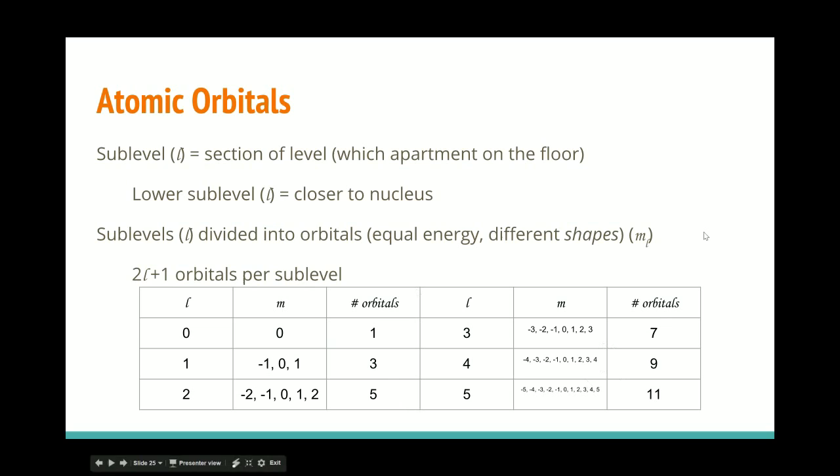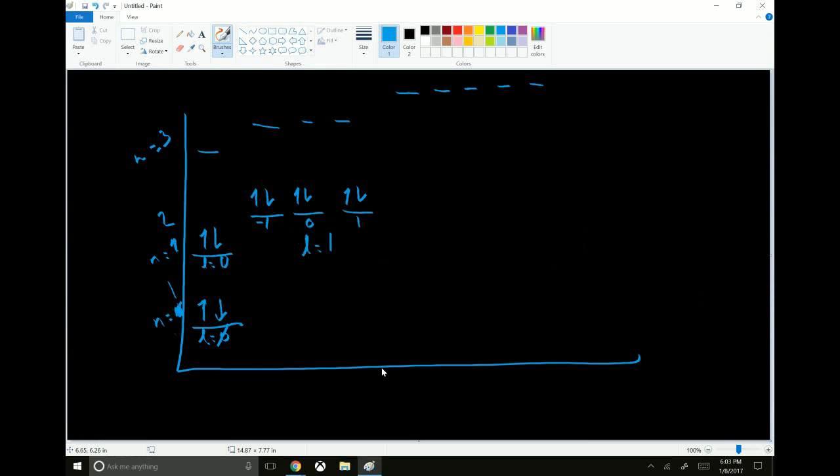So you can think of, you know, the first floor only has one sublevel and that one sublevel has a single apartment on it. It's just a single room. The second floor is going to have two sublevels, 0 and 1. So you're going to have an apartment with one room and you're going to have, the next one is going to be a suite with three rooms. So the second level actually has one, two sublevels. This one has one orbital. This one has three for a total of one, two, three, four orbitals.